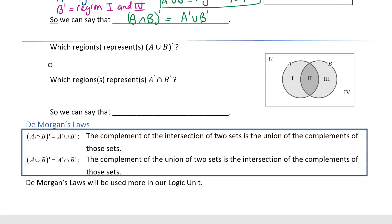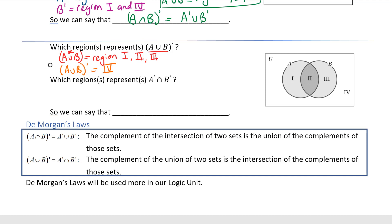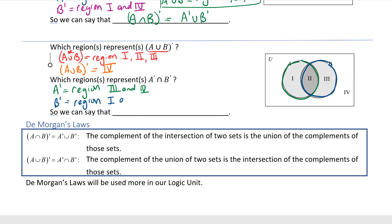For the next pair: A union B covers all regions in either A or B — regions 1, 2, and 3. The complement (A union B)' is anything not in those regions, which is region 4. For the other side: A' is regions 3 and 4; B' is regions 1 and 4.